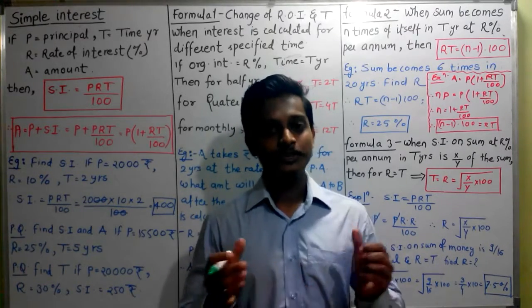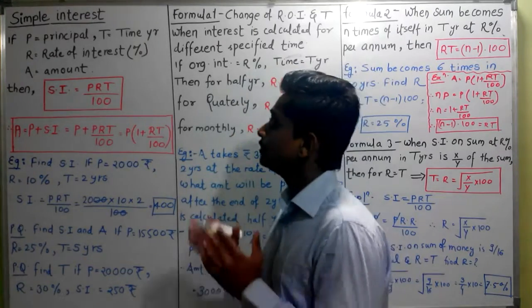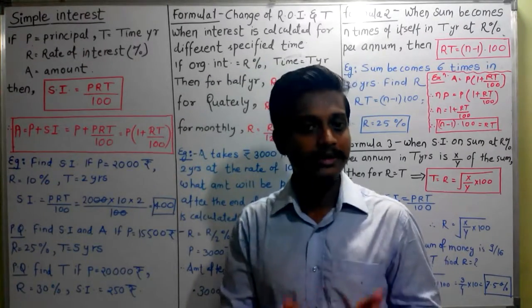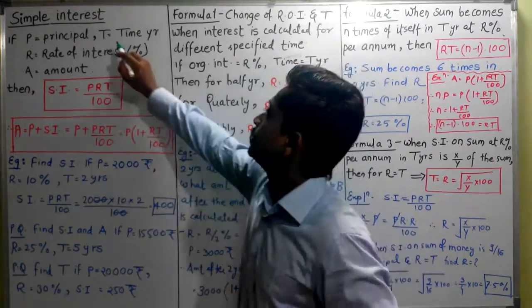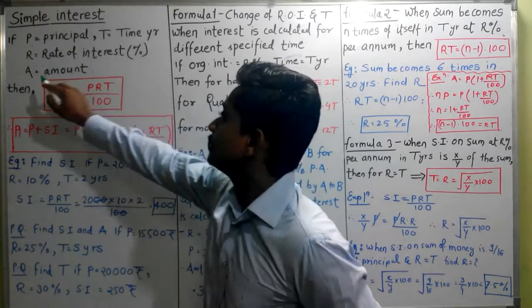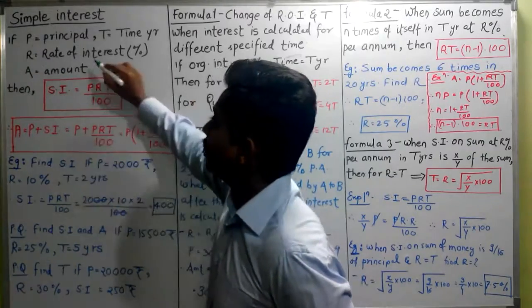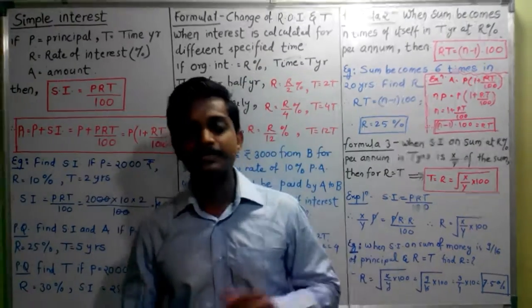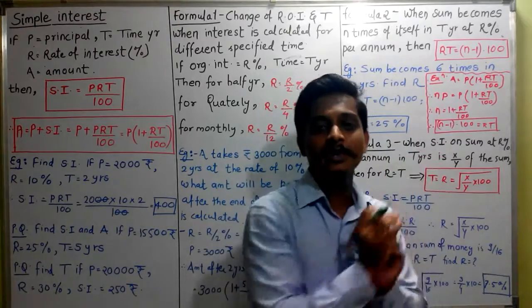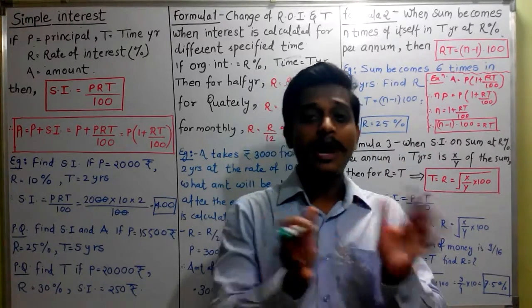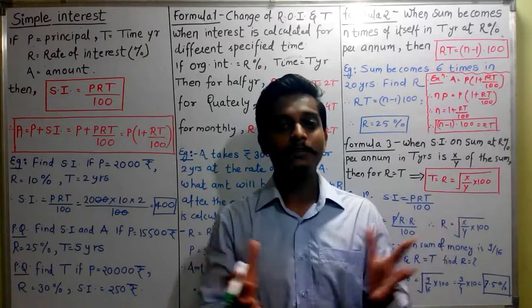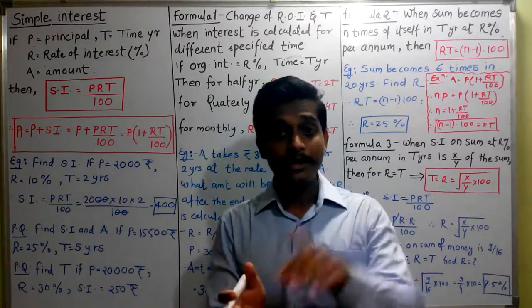Let us start simple interest. Suppose we have P as principal amount, that is the amount given to us. We have time duration T years, we have rate of interest R given as percentage, and what will be the final amount represented by A. For example, suppose you have 10,000 rupees in a bank for 2 years with bank interest at 5%. After 2 years, how much total money will you have?